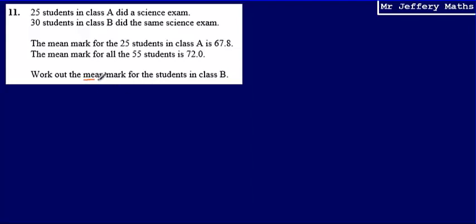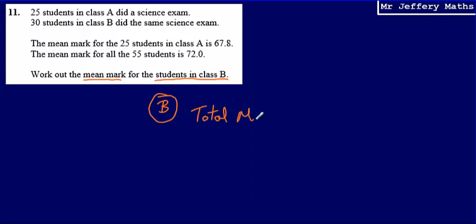In order to work out the mean mark for the students in class B, I would need to total the number of marks that all the students got in class B — add all of their scores together and then divide by the total number of students in class B, which is 30. That will give me my mean.